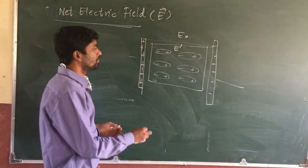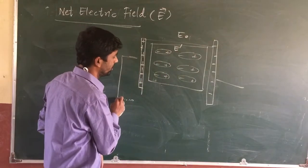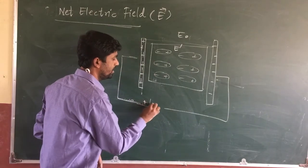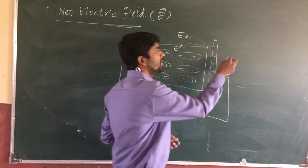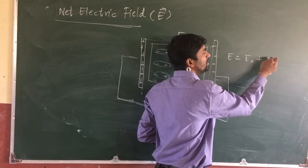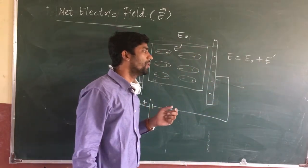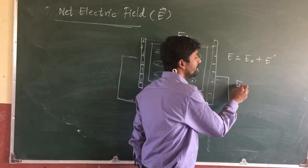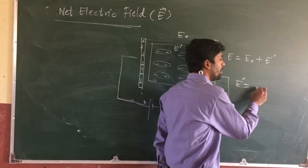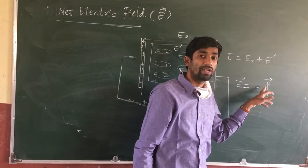When we calculate the electric field here — these are the positive and negative plates connected to the battery supply — the total net electric field is the sum of the external electric field plus the electric field induced inside the dielectric material. The electric field induced inside this dielectric material is given by minus P upon epsilon naught, where P is your polarization vector.